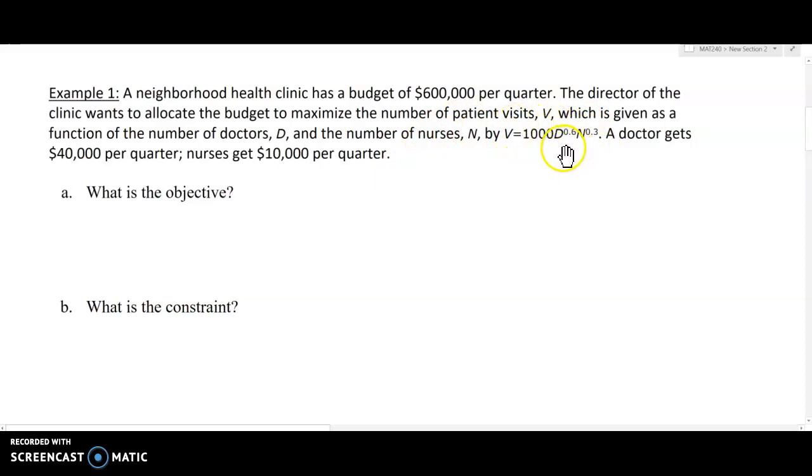This is actually a valid function - it's called a Cobb-Douglas model which is often used in business practice. If you want to look more into this you can google Cobb-Douglas (C-O-B-B hyphen D-O-U-G-L-A-S). This is our model and we know that a doctor gets $40,000 per quarter and nurses get $10,000 per quarter.